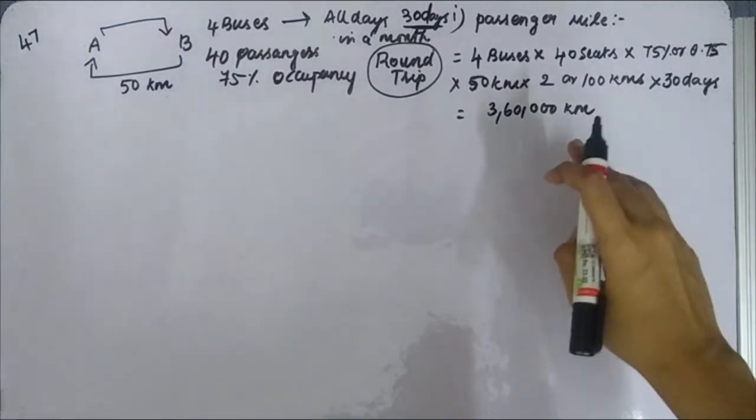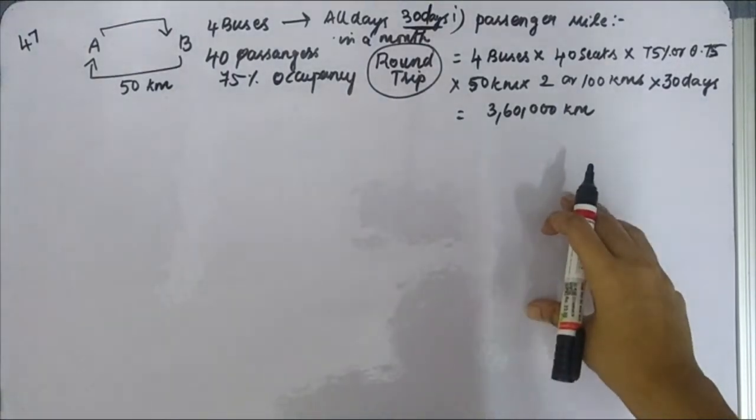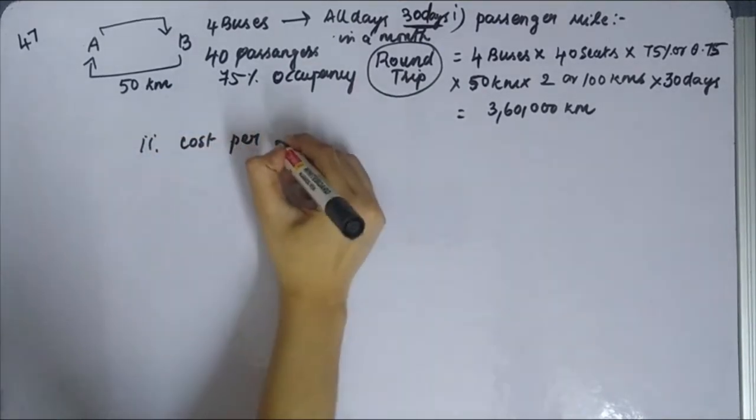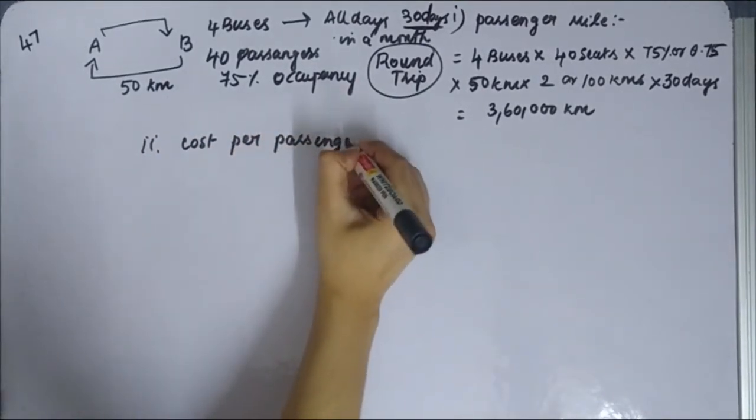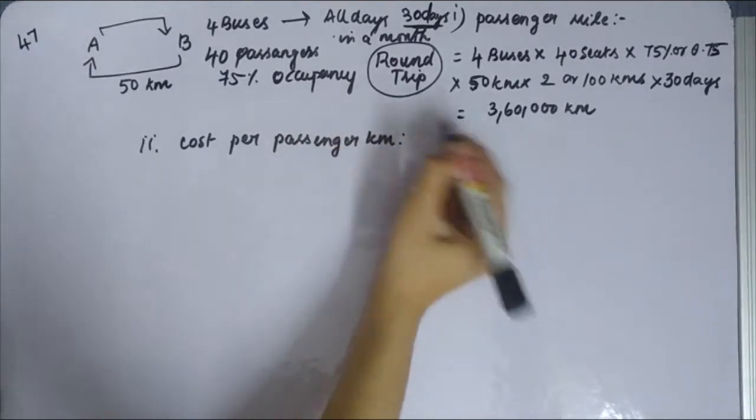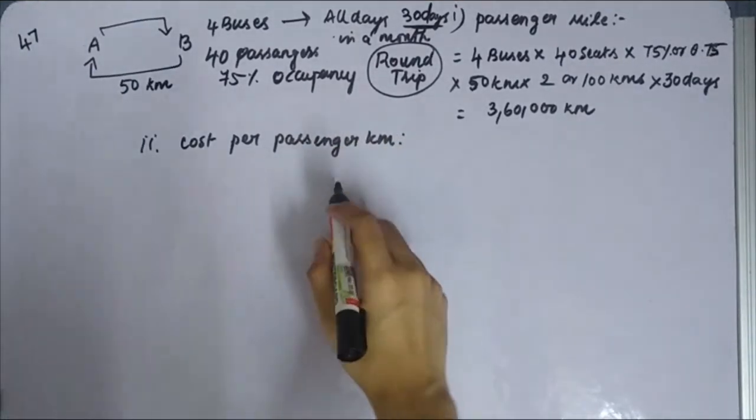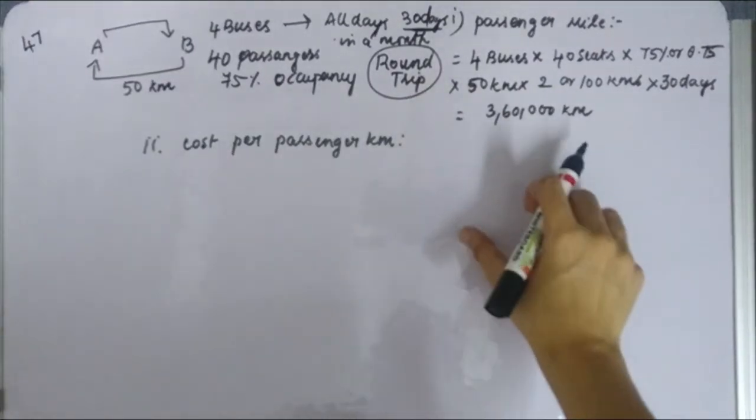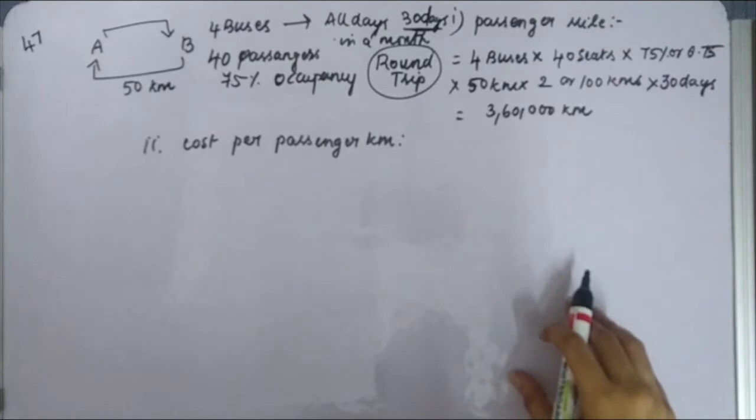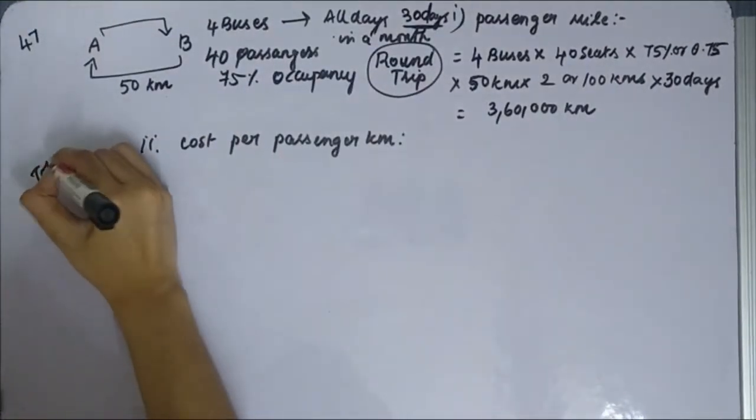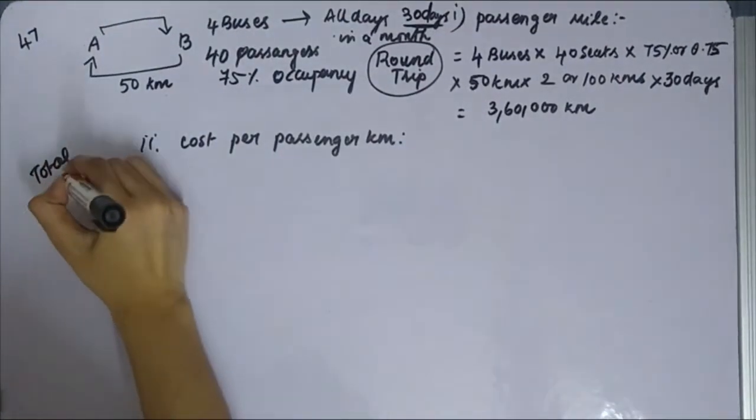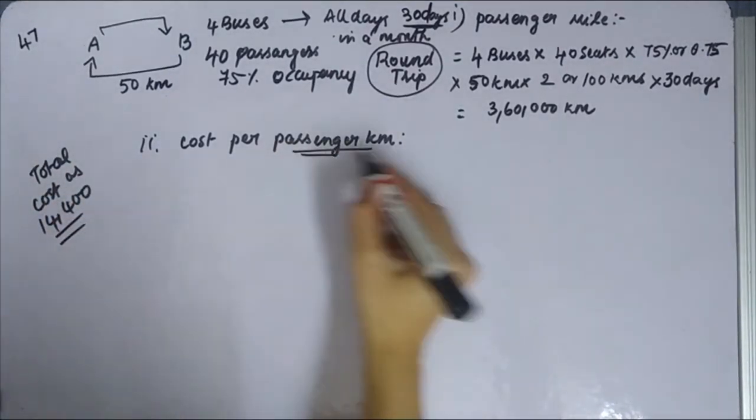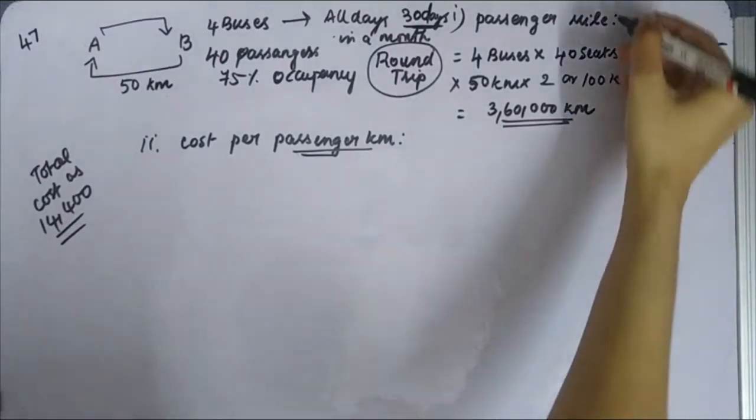Still we need to find out. What we have to find is cost per, cost per passenger kilometer. We need to find cost per passenger kilometer. Cost is already been given. Cost summary has been given in your question as total cost is 14,400. And passenger kilometer has also been calculated just now.